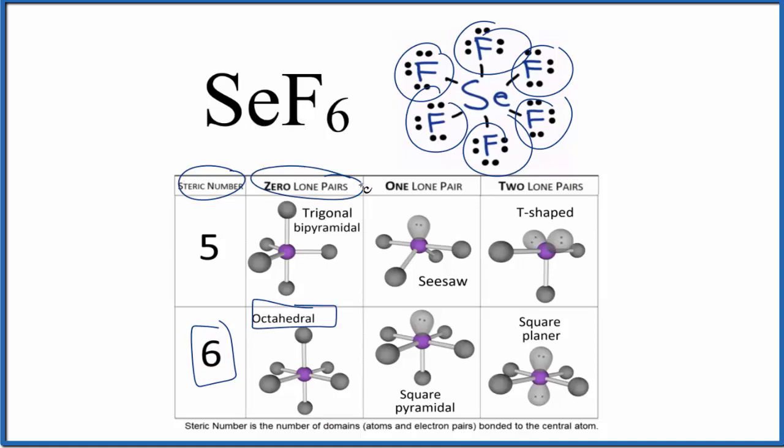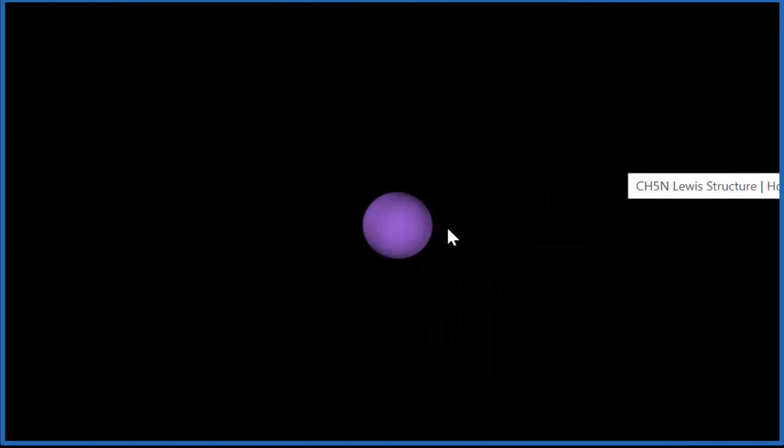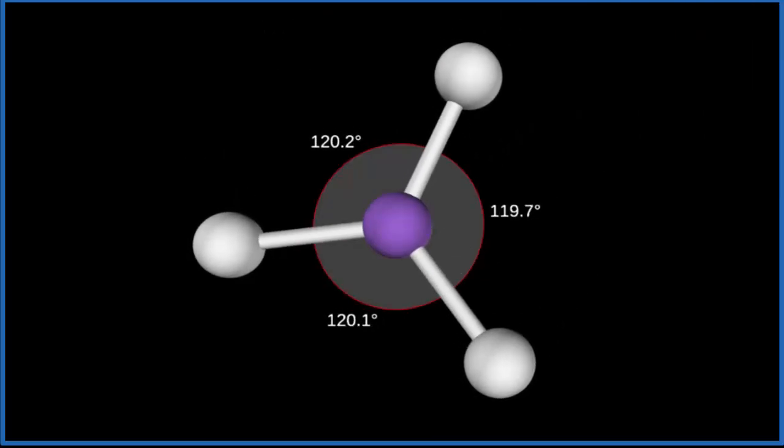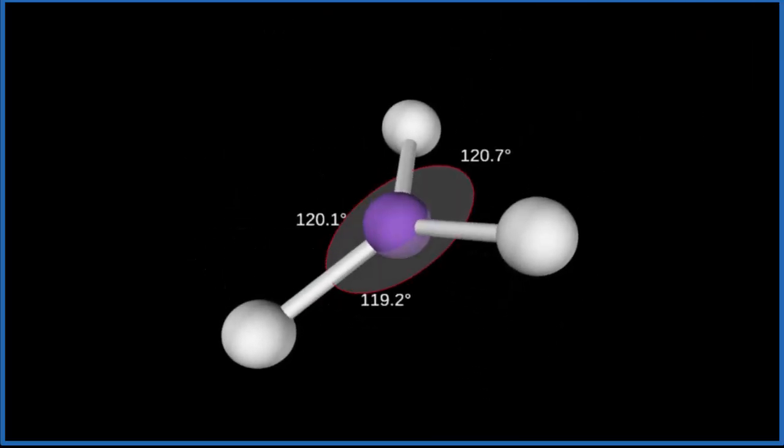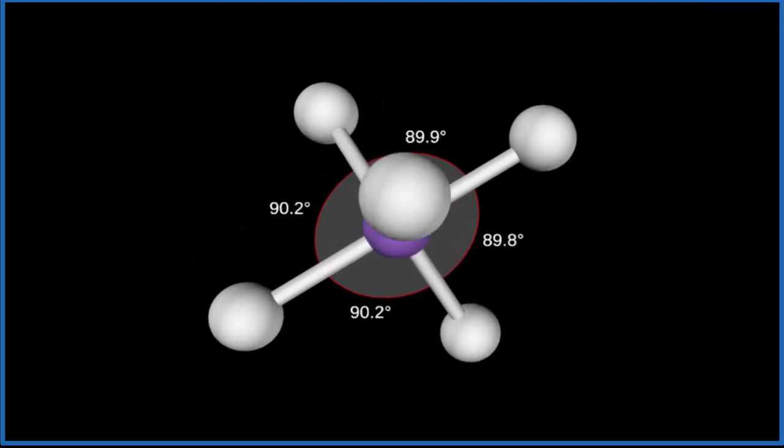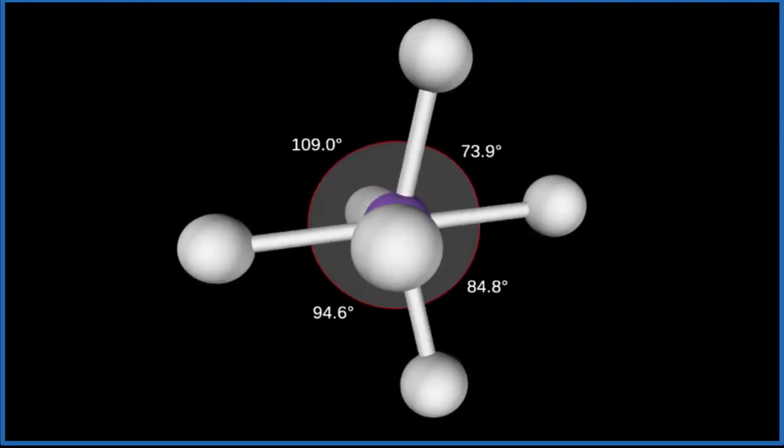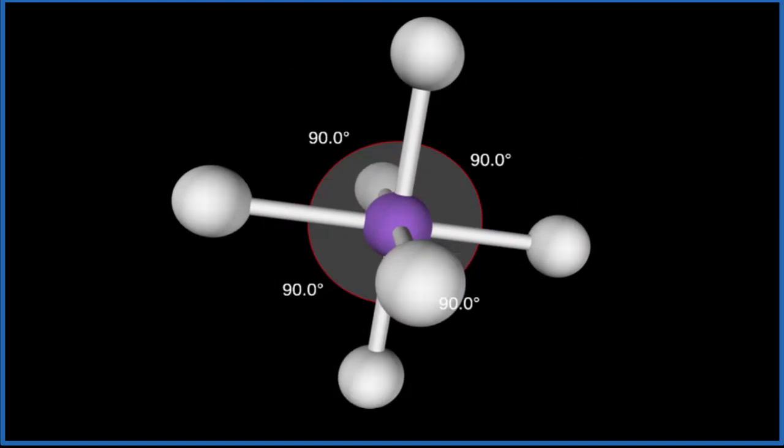Let's look at this in three dimensions. So the purple, that'll be the central selenium atom. And we're going to add six fluorine atoms. One, two, three. You see they spread out to be as far away as they can from each other. Four, five, and then the last one, six. And we end up with what's called an octahedral molecular geometry.